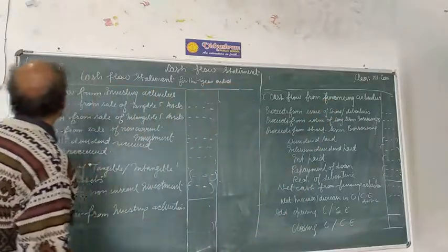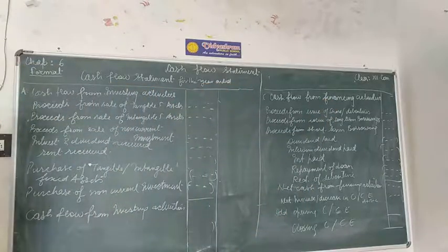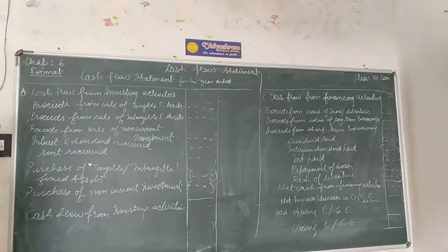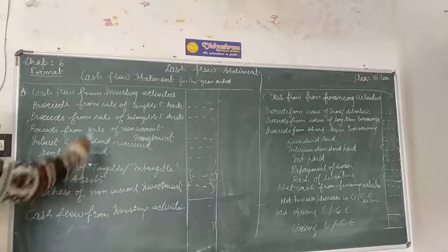Now, today we will take the remaining part of the Cash Flow Statement, B and C part. The B part is Cash Flow from Investing Activities.